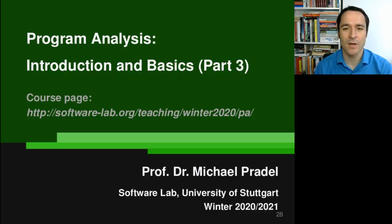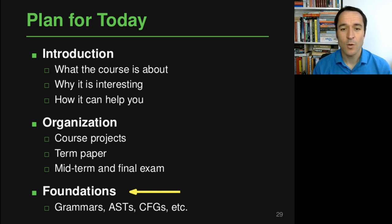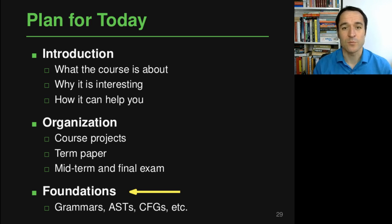Hi and welcome to part three of this first lecture in the program analysis course. In this third part we look at some of the foundations of this course — material you've probably seen in some other course during your studies, just to make sure everybody's on the same page. We look into grammars and some representations of programs, for example ASTs (abstract syntax trees) and CFGs (control flow graphs). If you've seen all this material somewhere else, feel free to skip this part.